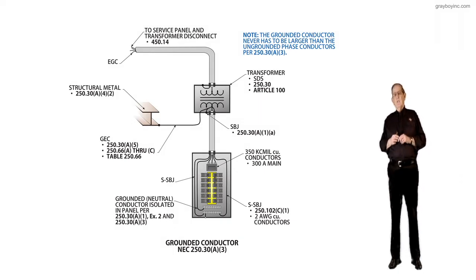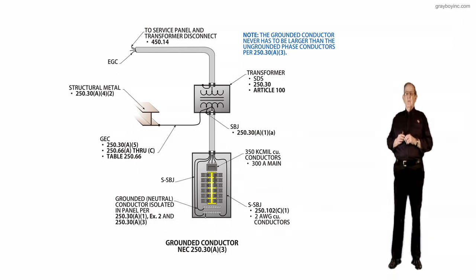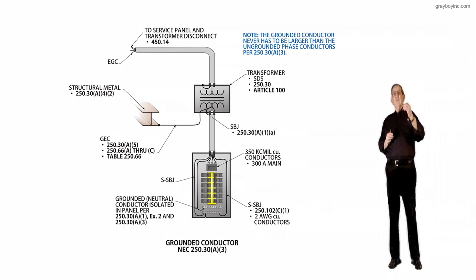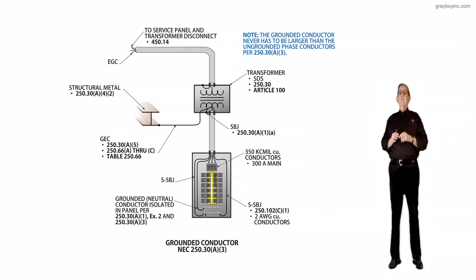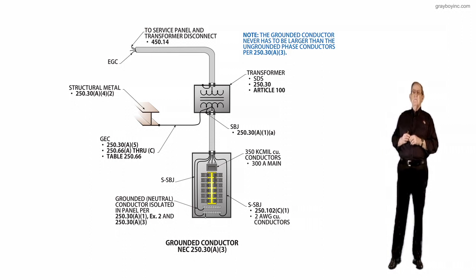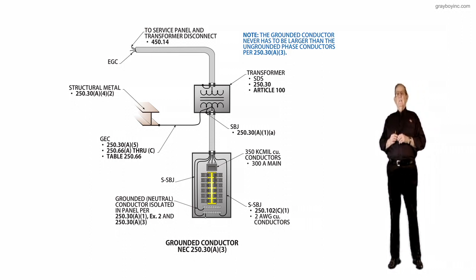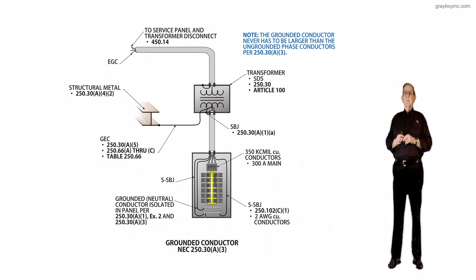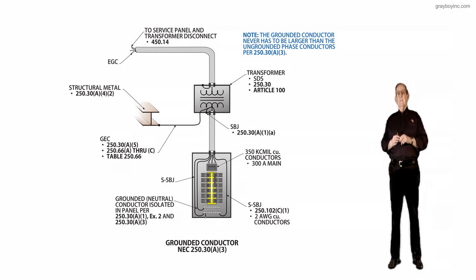This illustration deals with the grounded conductor, NEC 250.30A3. The grounded conductor usually carries any kind of fault current, short circuit current, back to the source and returns on the phase that has been grounded, creating a ground fault in some cases or short circuit, and clears that overcurrent device that's involved.